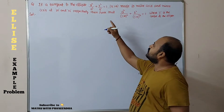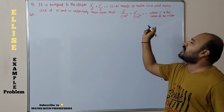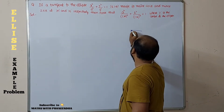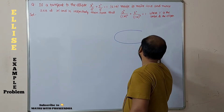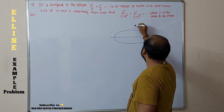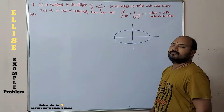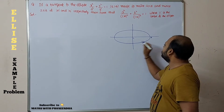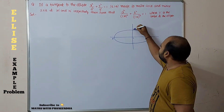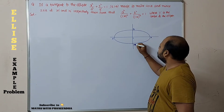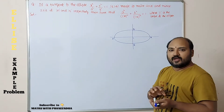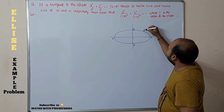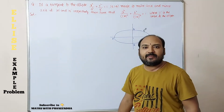First, if you draw the figure you will get an idea. If the tangent meets the ellipse, it meets the major axis and minor axis at the points M and N. This is the figure of the ellipse. Here C is the center, AA' is the major axis, BB' is the minor axis. I am assuming any point on the ellipse P(θ), which means (a cosθ, b sinθ).